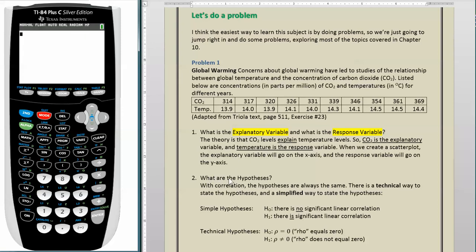Question number 2. What are the hypotheses? Correlation is a hypothesis test. So much of the procedures we have used to do hypotheses testing before apply equally to correlation, and that starts off with the hypotheses themselves. With correlation, the hypotheses are always the same. There is a technical way to state the hypotheses, and a simplified way to state the hypotheses.